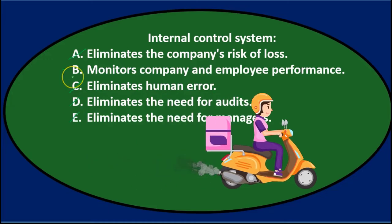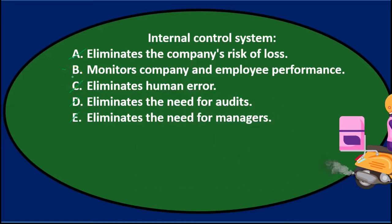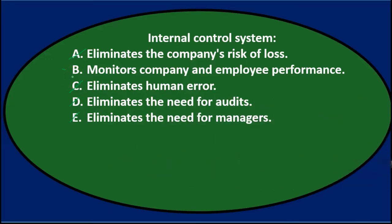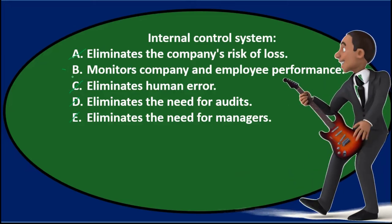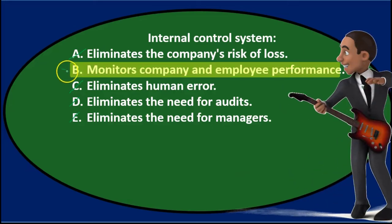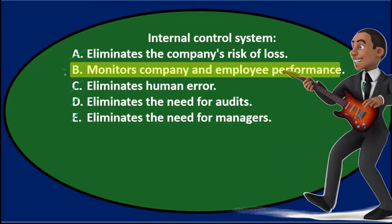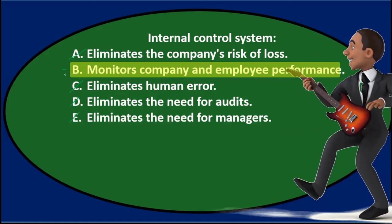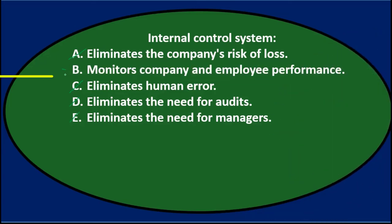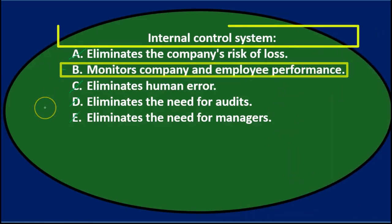So clearly that word 'eliminates' pretty much eliminates four of the five choices. I think B is going to be the answer here. Internal control system — B. Monitors company and employee performance.